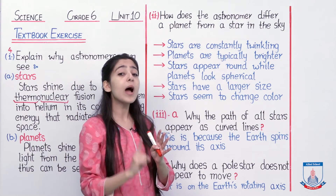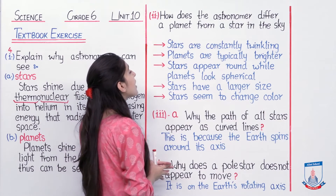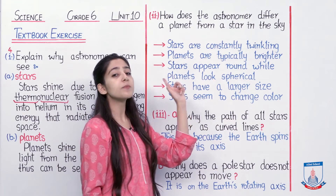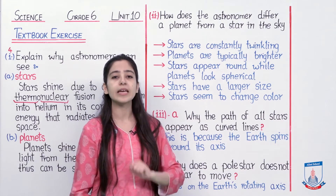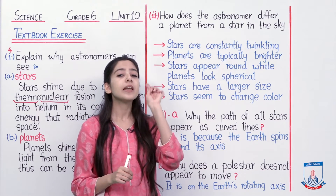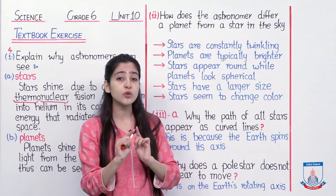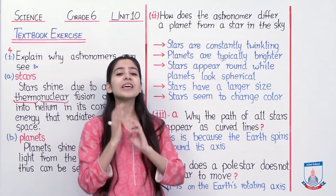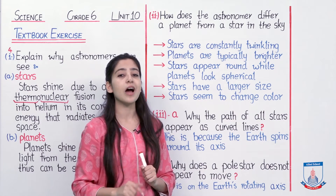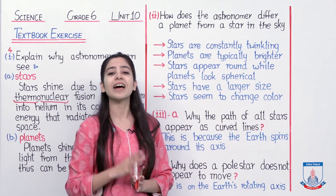Ab star apni jo light hai, wahan par planets will be brighter than star. Third technique hai: the stars appear round while planets look spherical. Yeh point bhi aapko telescope se nazar aayega. Agar aap ghor se dekhenge star ko, toh woh ek dot ki tarah round shape mein nazar aayega, jis tarah koi bulb hota hai, LED bulb ki jo shape hai woh round hoti hai — which will be our star. Agar aap telescope se ghor karein aur spherical shape ho, hamare star ki, toh that is not a star. Woh actually hamaara planet hai, jo ki light ko reflect karke shine kar raha hai.